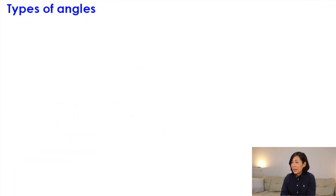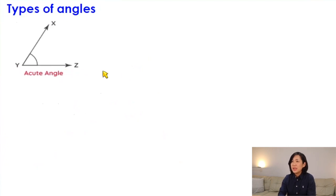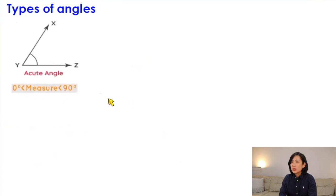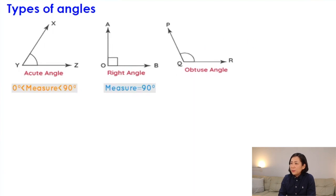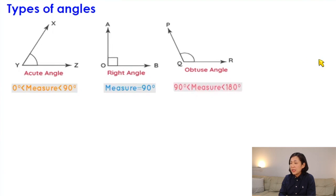Let's quickly recap the different types of angles from the smallest to the largest. The first angle is called the acute angle — acute angles are less than 90 degrees. The next one is a right angle, which is exactly 90 degrees. Then the obtuse angle is greater than 90 degrees and less than 180 degrees. A straight angle is definitely 180 degrees.